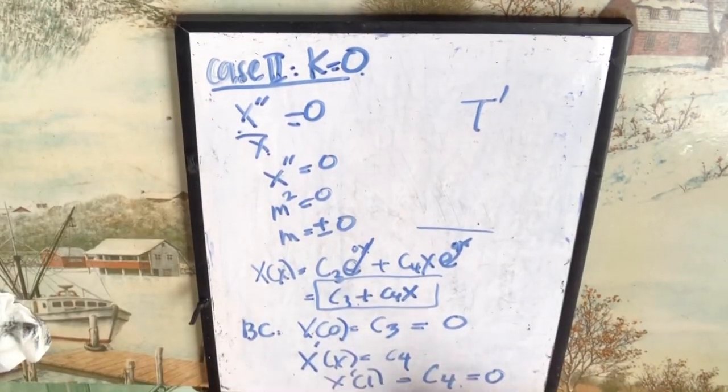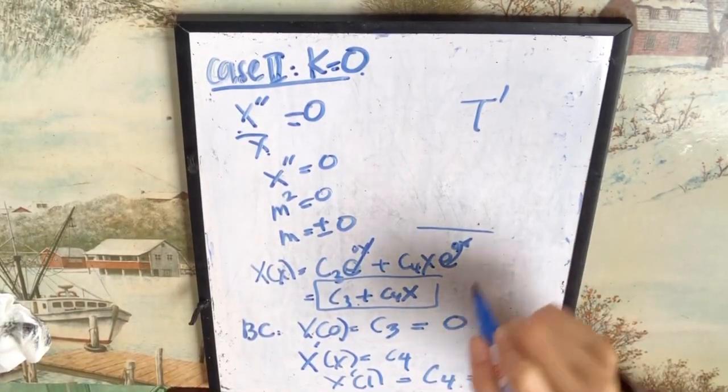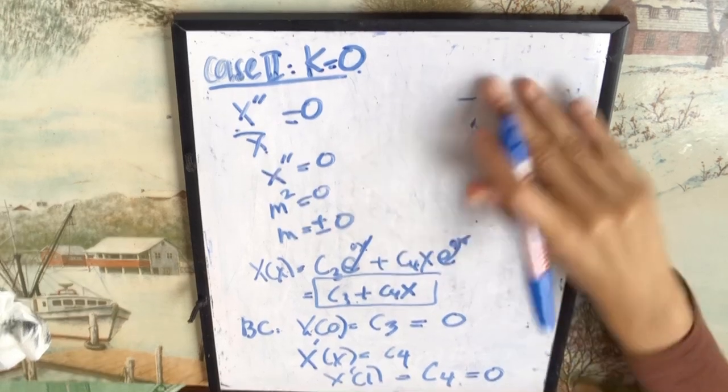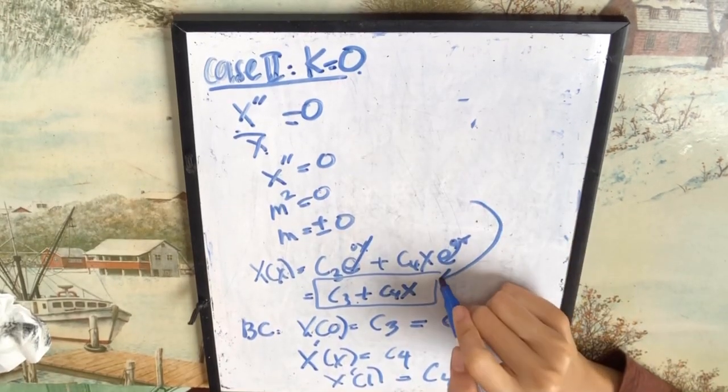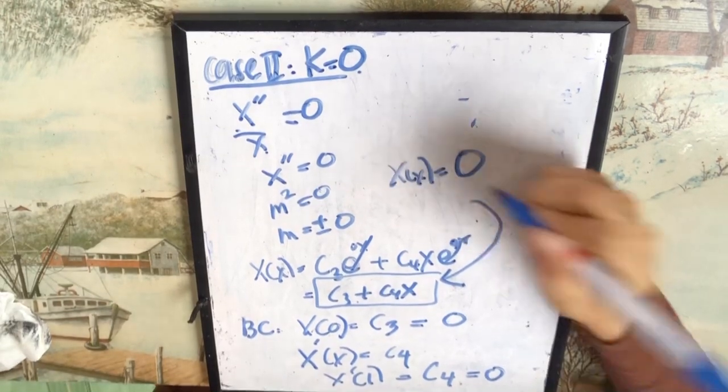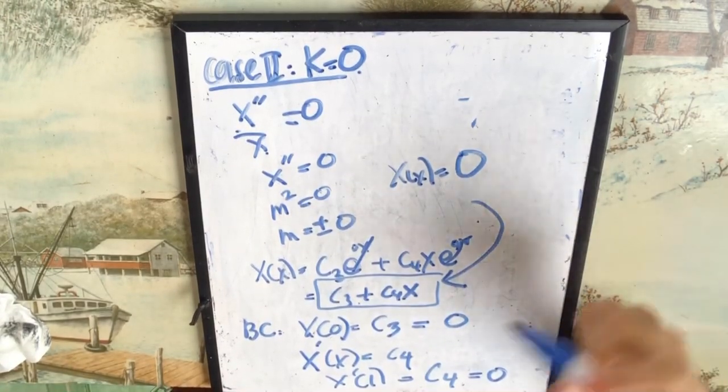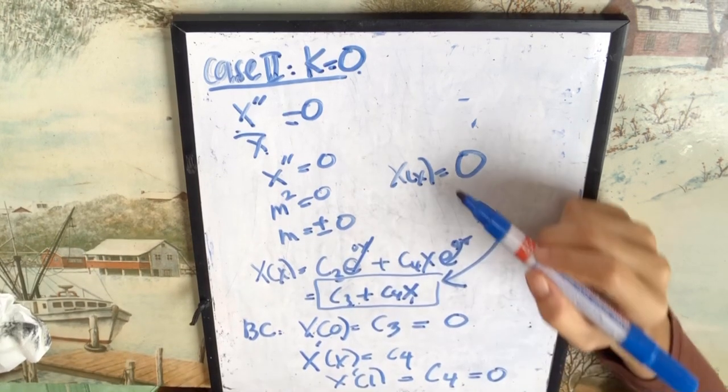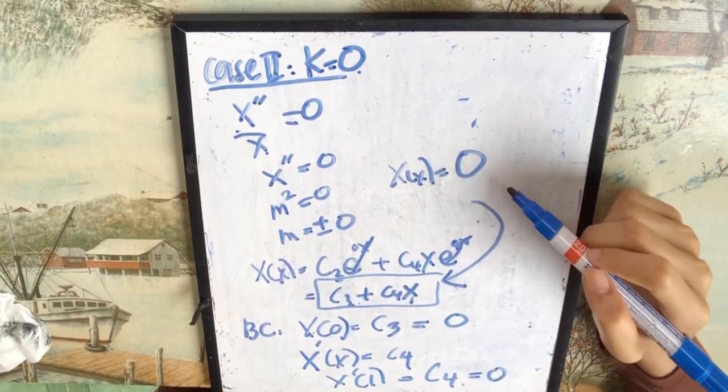Okay, so your c3, c4, both 0. Okay, so what we do next is substitute. Substitute into this equation. Okay, you will get all are 0s. c3, 0. c3, c4, 0. So this means your x equation equal to 0.